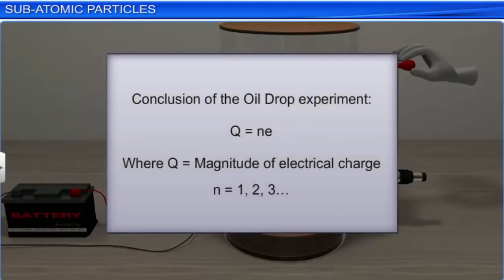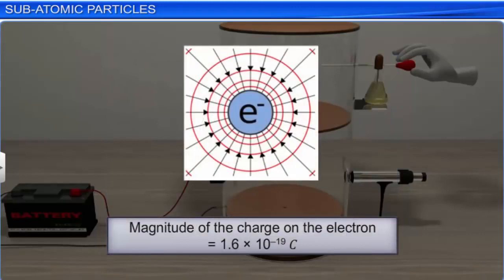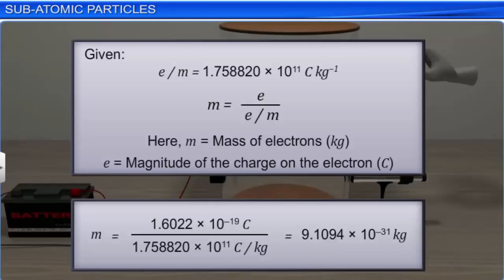The X-rays displaced electrons from air molecules, which negatively charged the oil droplets. On applying voltage to the upper positive plate, the charged oil droplets got attracted towards it against gravitational and electrostatic forces. Millikan varied the voltage to balance the acting forces and make the oil drops stationary. He found that the magnitude of electrical charge Q on the droplets is always an integral multiple of the electrical charge E, i.e., Q = nE. Knowing Q and N, Millikan calculated the charge on an electron to be 1.6 × 10⁻¹⁹ coulombs.